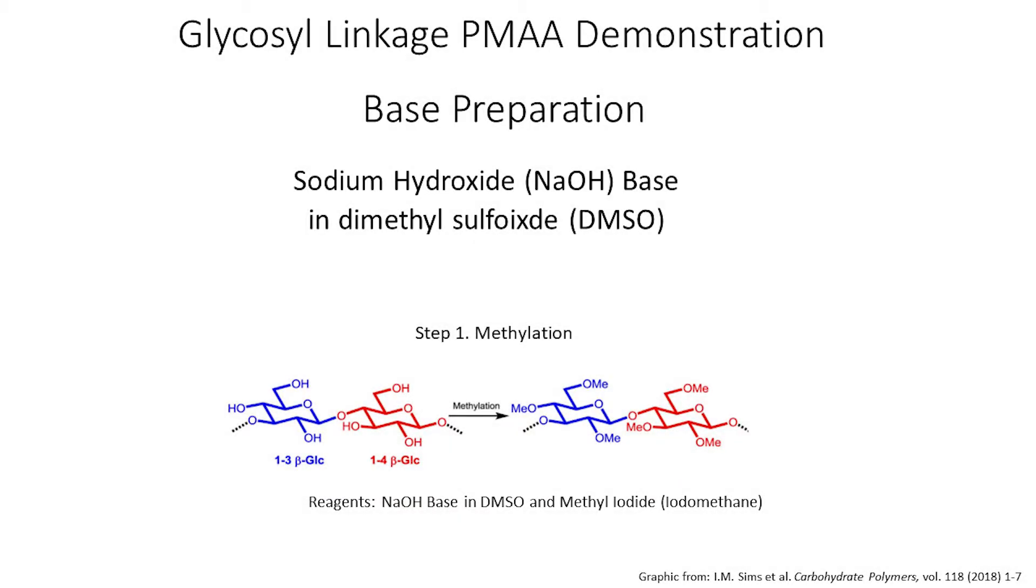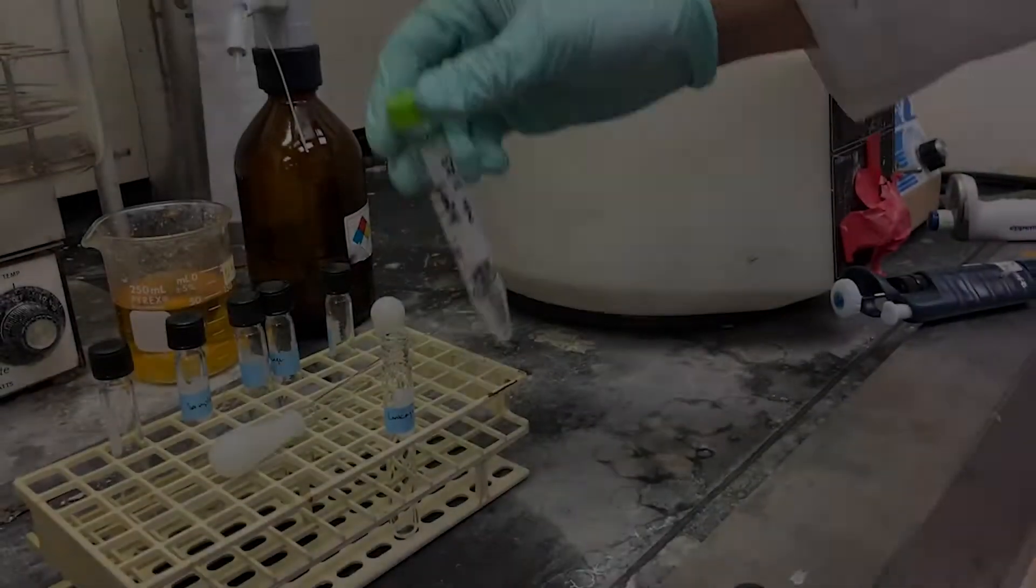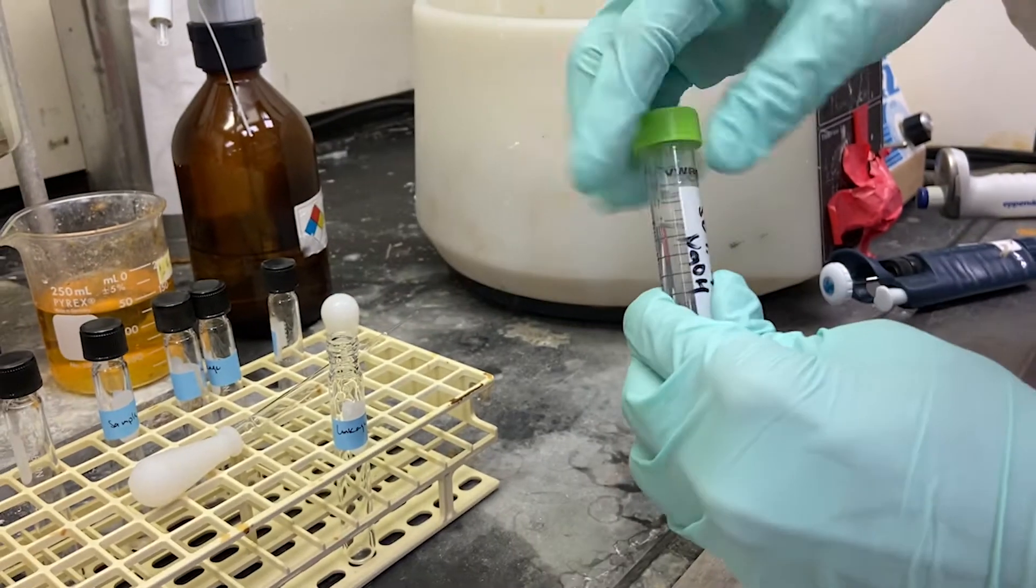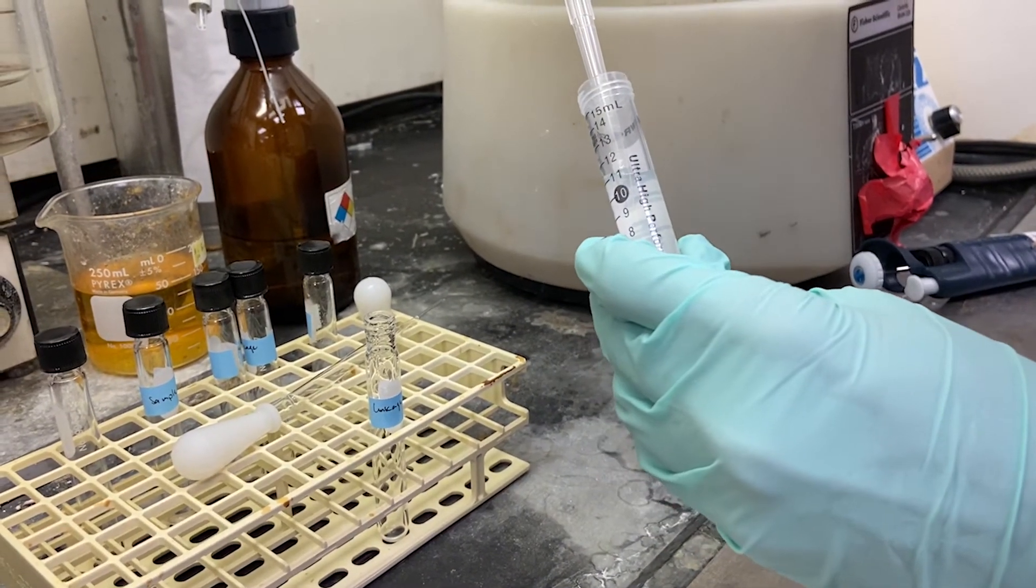For the methylation step, we prepare a base using sodium hydroxide in DMSO. This is a strong base able to ionize carbohydrate hydroxyl groups allowing them to react with methyl iodide to form stable methyl ethers. For the first step of this experiment, we will start by demonstrating the preparation of this base.